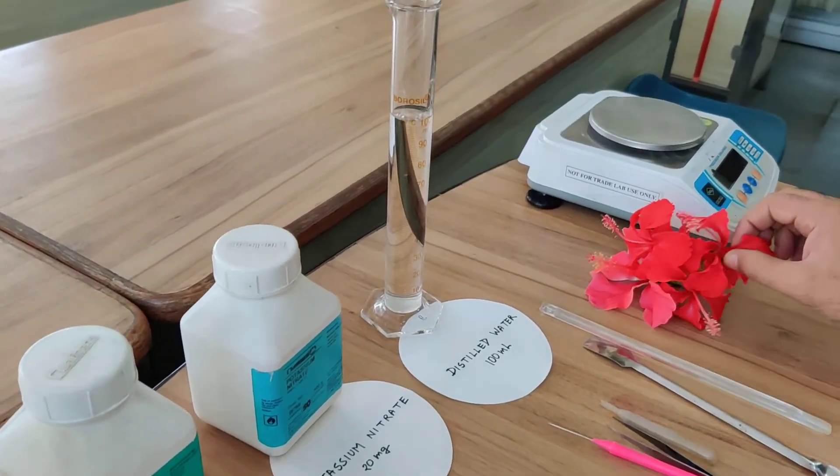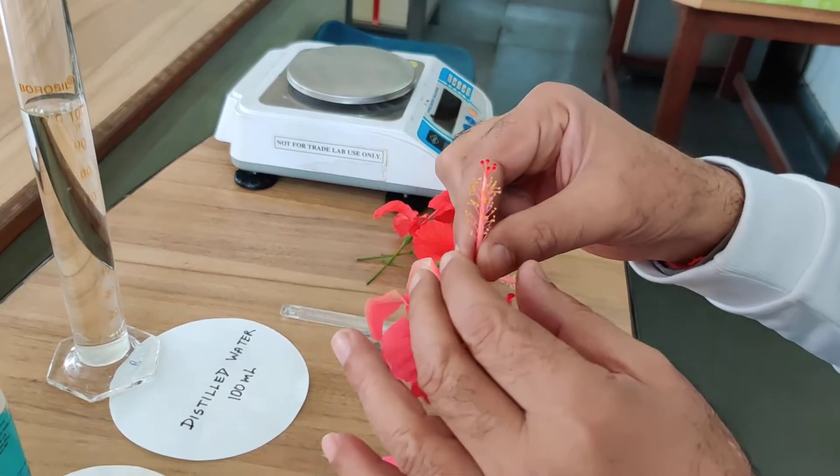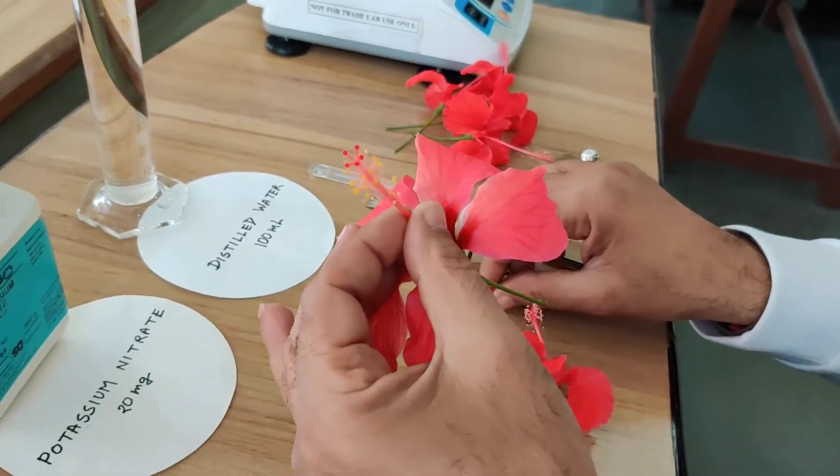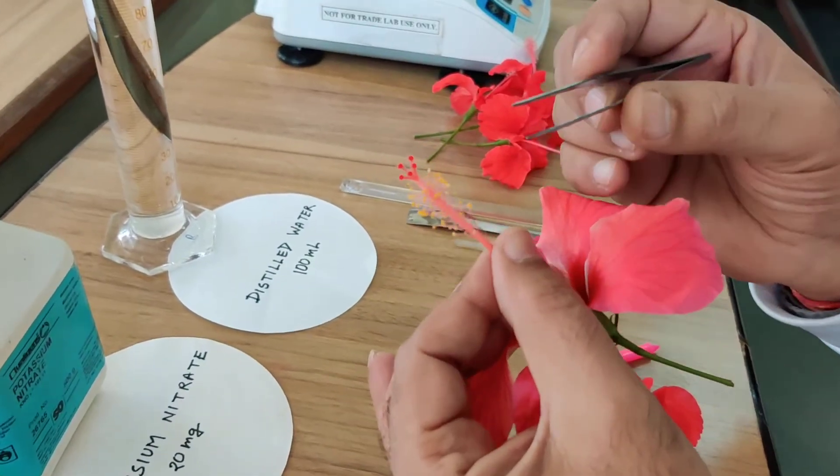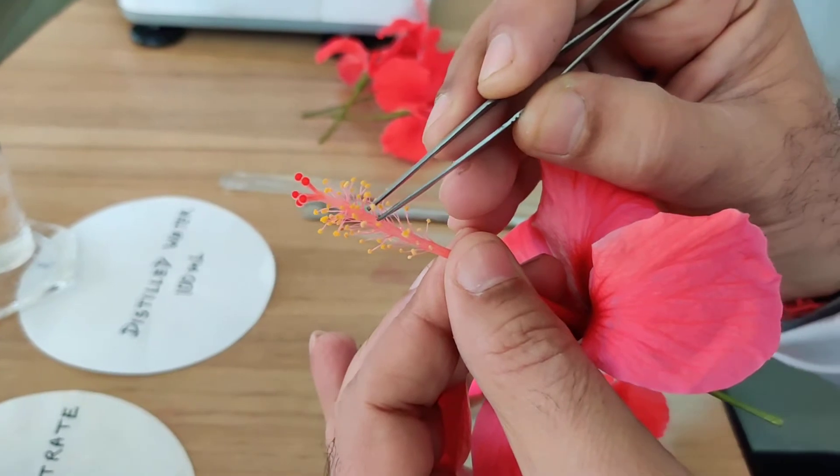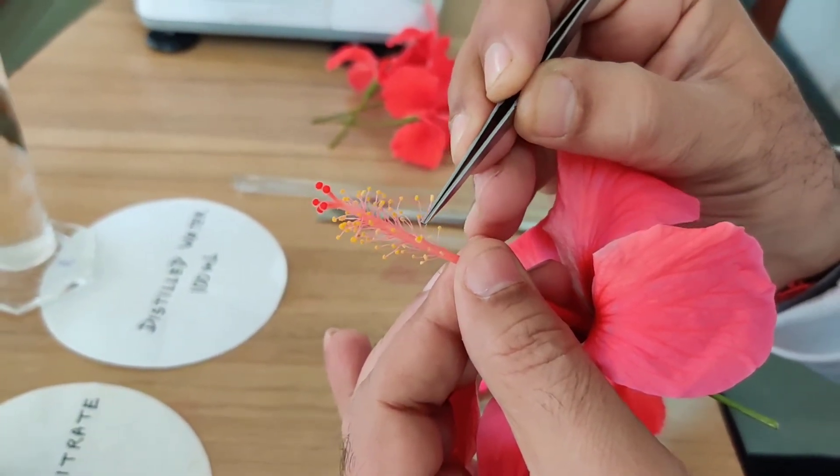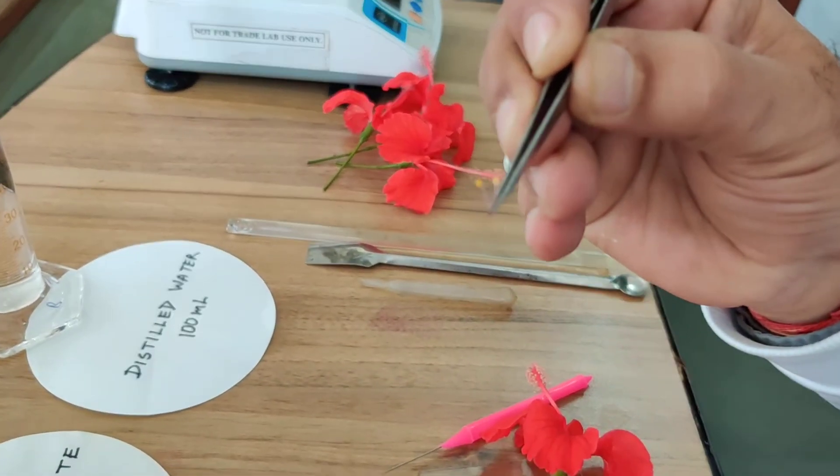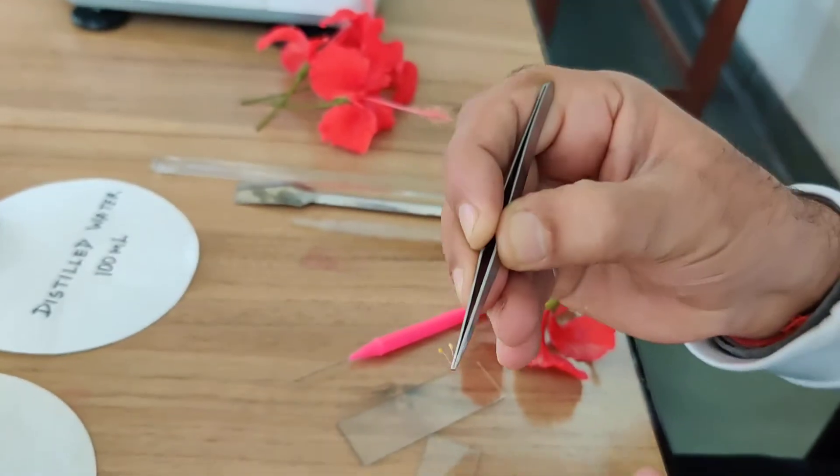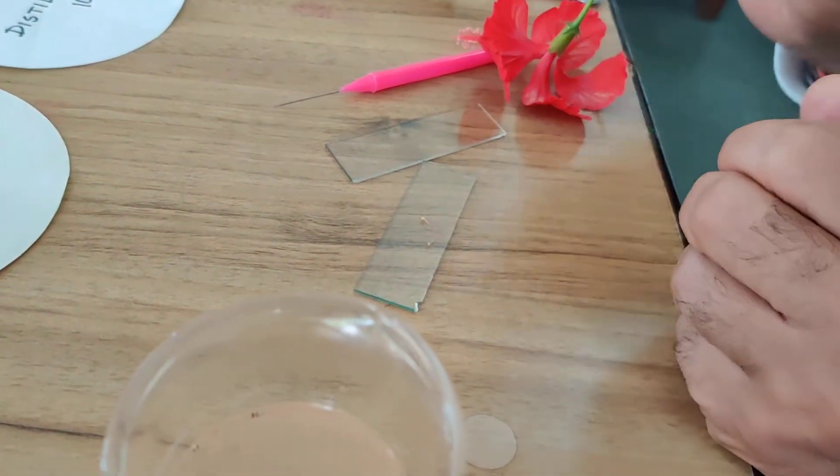Now I am taking a mature flower and from this mature flower I am taking a mature anther, where pollen grains are totally developed. It is a dehisced anther and I am just putting it here on a slide.